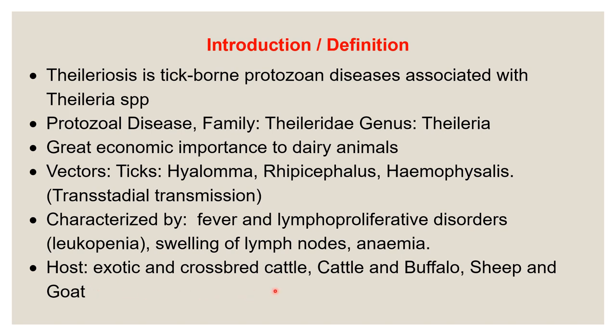Most affected hosts are exotic and cross-breed animals. Exotic animals are highly susceptible, cross-breeds less susceptible in comparison to exotic, and local or indigenous cattle and buffaloes are least susceptible. The disease also occurs in sheep, goats, and horses.